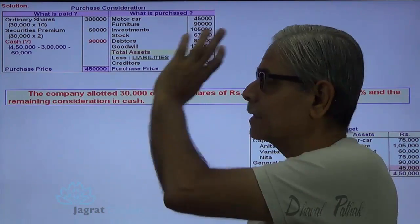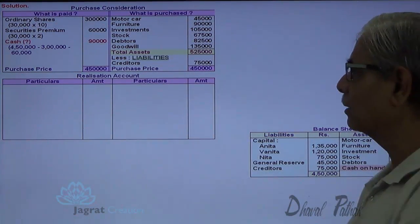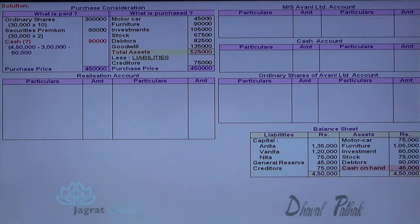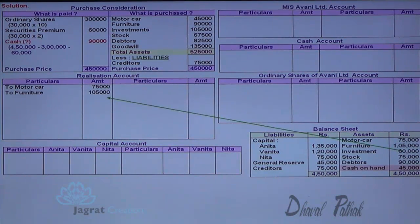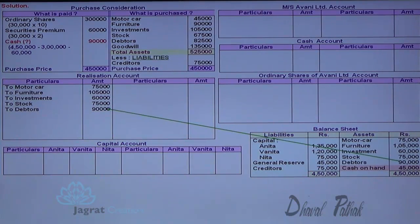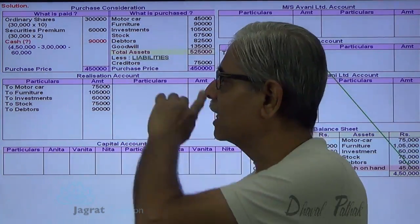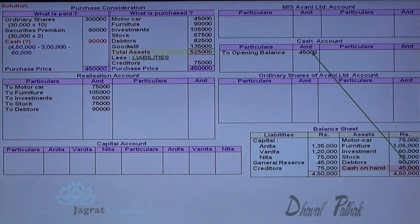Now we prepare the ledger accounts: realization account, Avni Limited account, cash account, ordinary shares of Avni Limited account, and capital account. All assets to be realized are transferred at book value to the debit side of realization account — motor car, furniture, investment, stock — at their book values. Since cash is not sold, the cash balance of 45,000 appears as opening balance in the cash account, not in realization account.